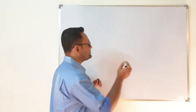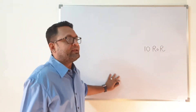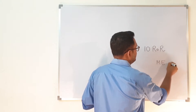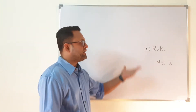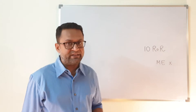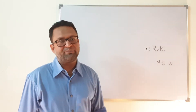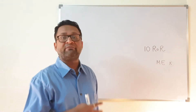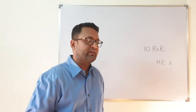We know that there are ten rules of replacement, and we can solve all of them except one — that is material equivalence. We will not be able to solve material equivalence. The rest of them we can solve. When proving any of the identities, we use all eighteen rules: nine rules of inference plus the other rules of replacement, apart from the rule of replacement which we are currently trying to prove.